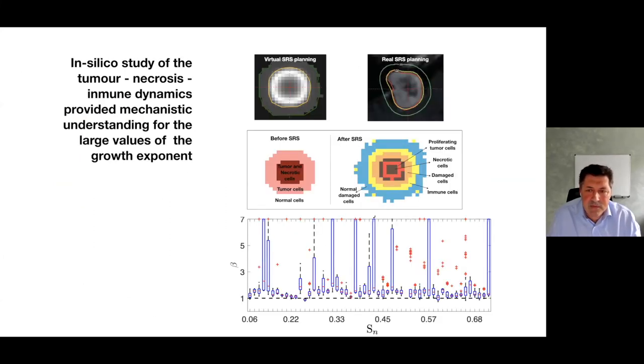We can also do mathematical models of why this exponent beta is so high for radiation necrosis, and it's not complicated. It's just putting together the laws of inflammatory reaction, immune cells, necrosis, proliferating cells, and normal tissue. You put all that biology together and you get consistently exponents beta substantially larger than 1 and close to maybe between 2 and 3, which is what we have in the clinics.